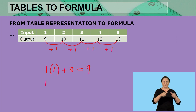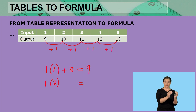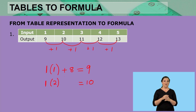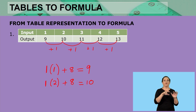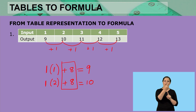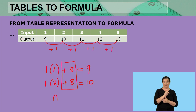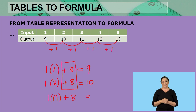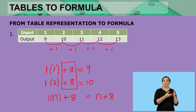Let's do the same for the second one. We take 1, the number we are adding every time, and multiply it by our input value 2. After adding or subtracting, our answer should be 10. So 1 multiplied by 2 is 2 — what do we add to 2 to get 10? We add 8. The number we are adding is the same for both values. So our rule is n multiplied by 1 plus 8.